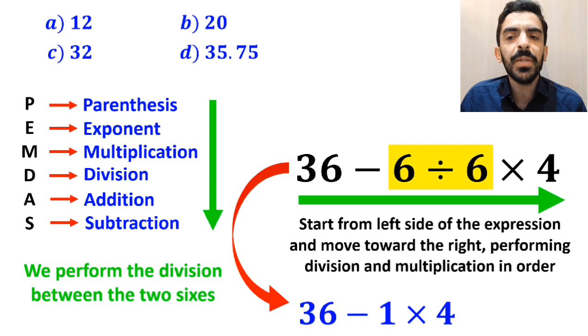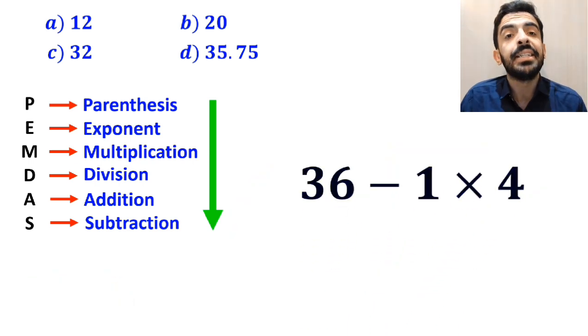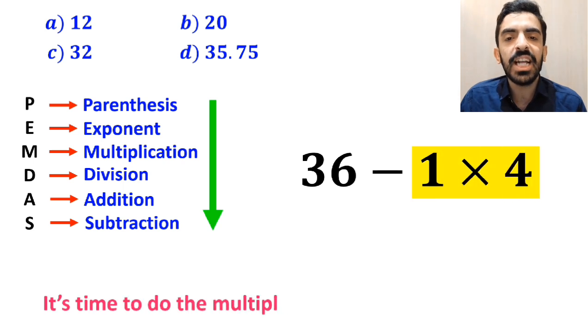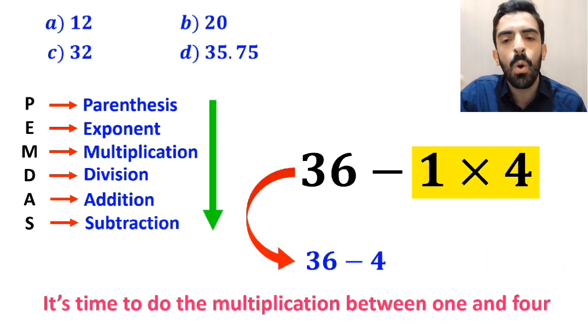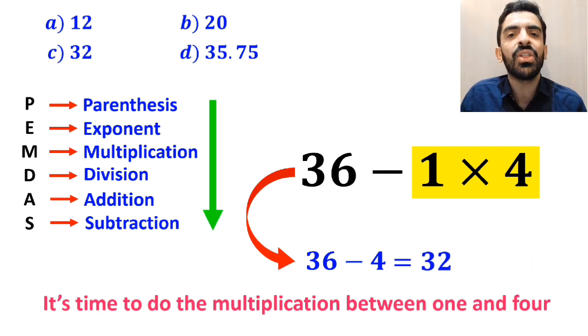This expression simplifies to 36 minus 1 times 4. Now it's time to do the multiplication between 1 and 4, which gives us 36 minus 4, and finally the value of this expression is equal to 32.